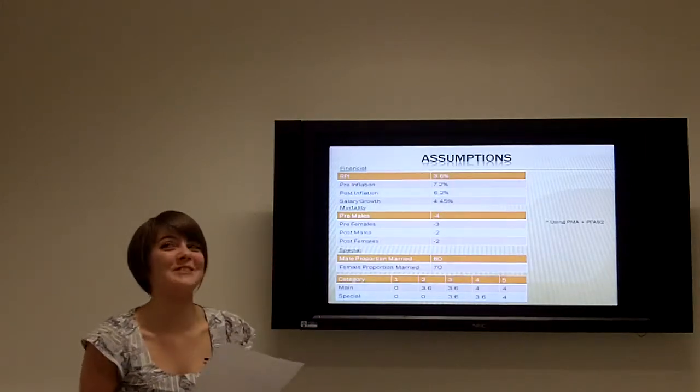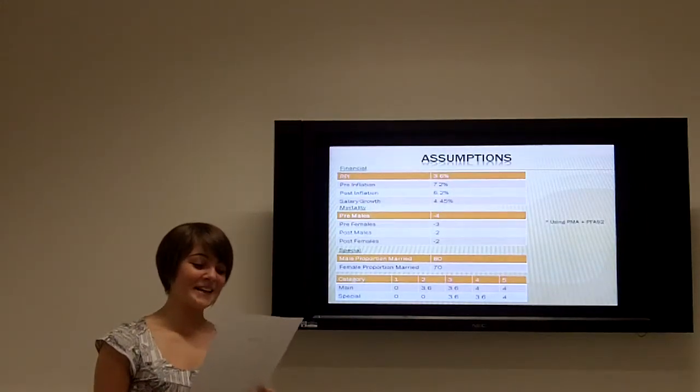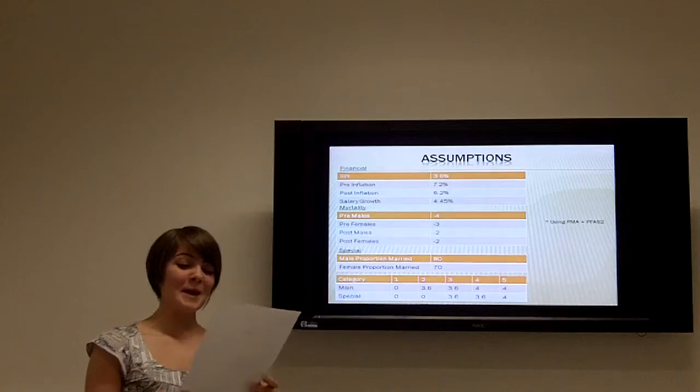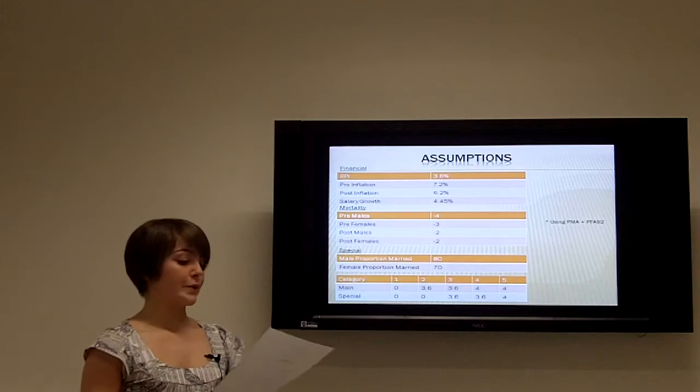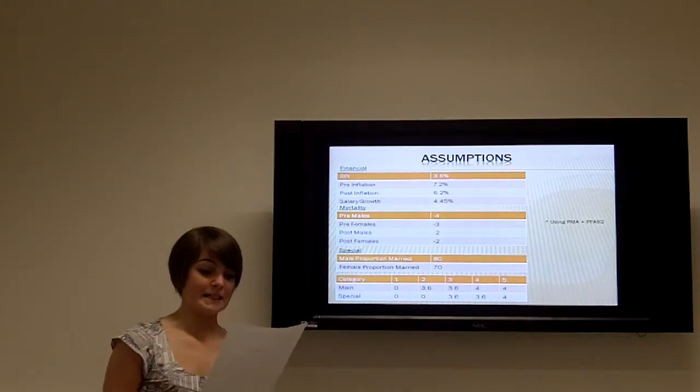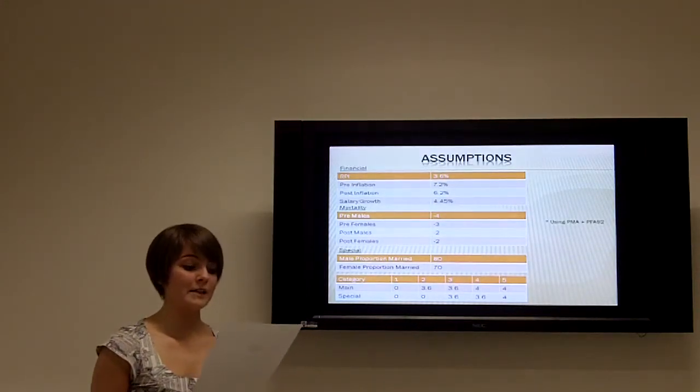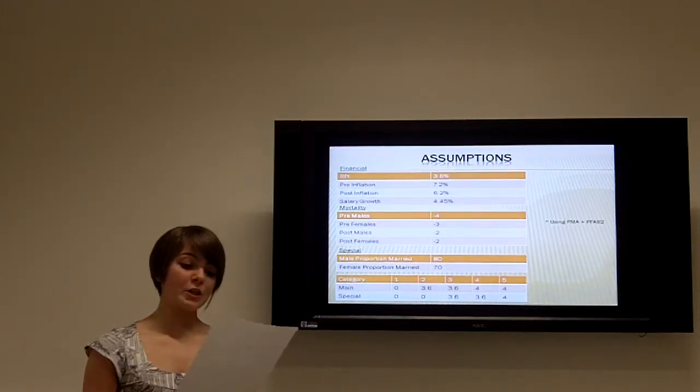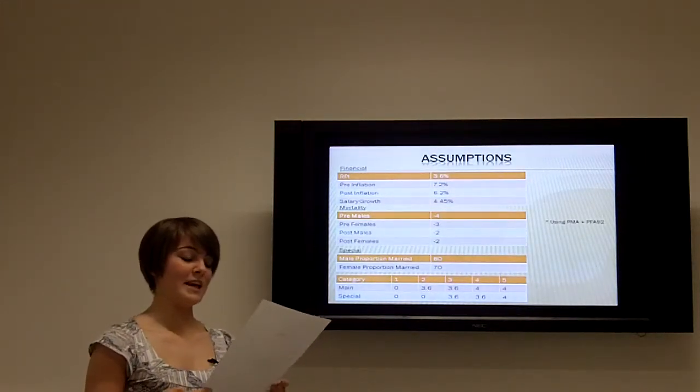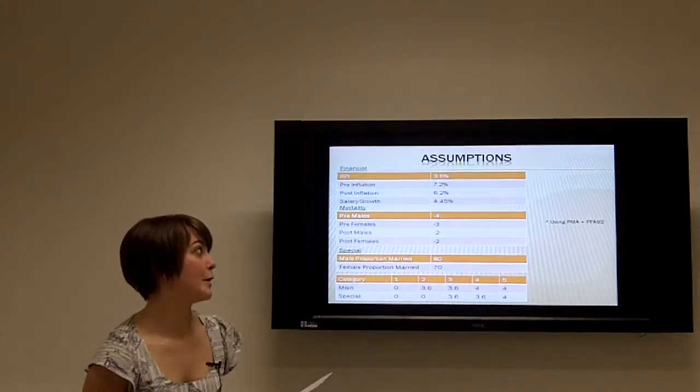We then moved on to mortality rates. We calculated the following mortality rates using the PMI 92 and PFA 92 tables as our basis. We then used the Northern Ireland mortality rates from the National Statistics website to work out the current life expectancies and we used this information to adjust the PMI 92 and PFA 92 tables as shown below.